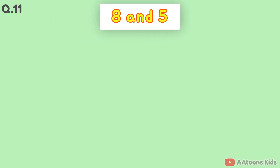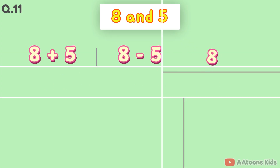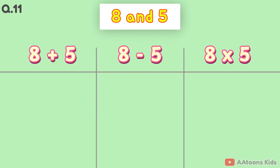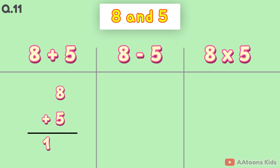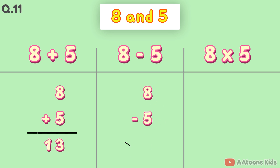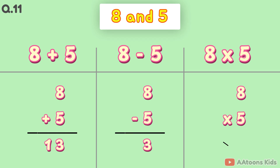The two numbers are 8 and 5. 8 plus 5 is 13. 8 minus 5 is 3. 8 times 5 is 40.